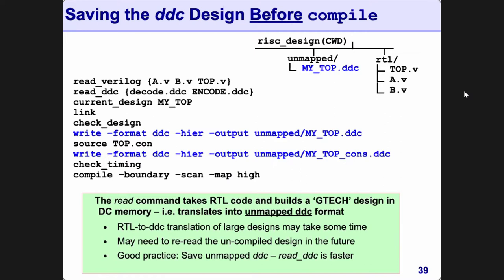Every time you make some change to your design, we recommend saving it. For example: read in your design, save it — this is a clean unmapped design. Then apply some constraints; constraints are embedded inside the DDC file, so save it with a different name. Then compile the design and save again. If a previous step has an error, you can always load that DDC file and continue without wasting time re-reading constraints.